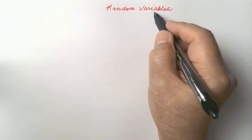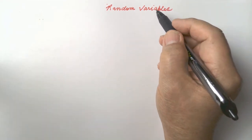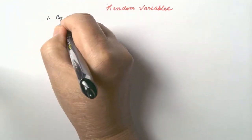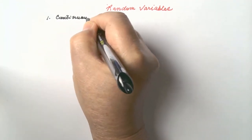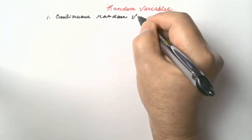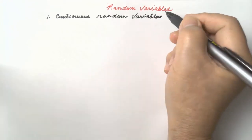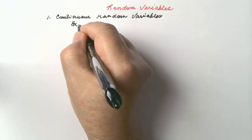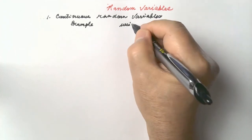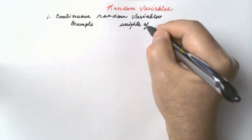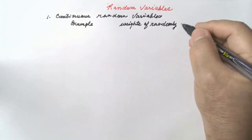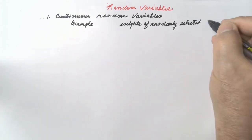Random variables are either continuous or discrete. For continuous random variables, an example would be the weights of randomly selected boxes.